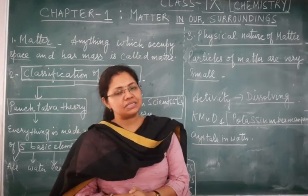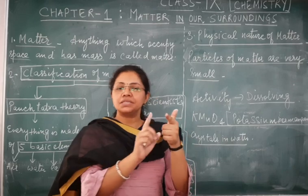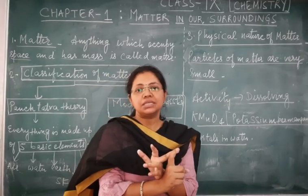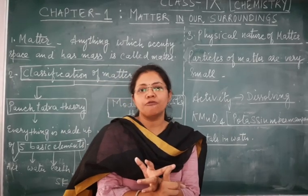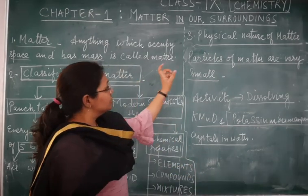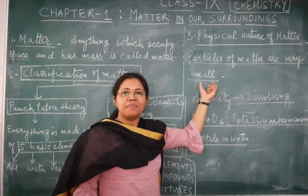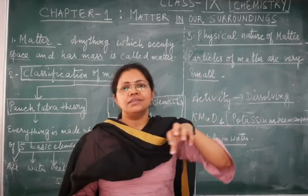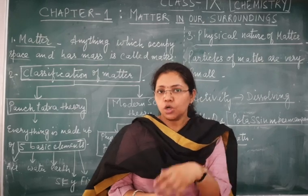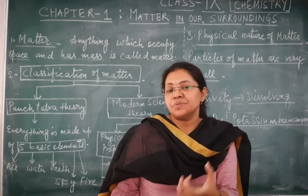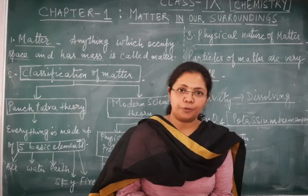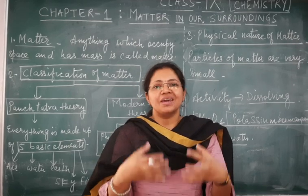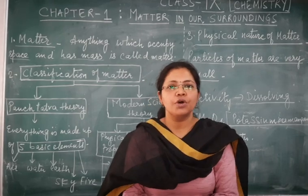So till now I discussed with you what is matter, then we discussed how matter can be classified, and then we discussed that the physical nature of matter is particulate — meaning matter is made up of particles. Now, these particles which together make up matter are very, very small. They are so small that they are not visible to our naked eyes, and they are not visible even under a powerful microscope. To practically prove that matter is made up of very, very small particles, we will conduct one more activity.